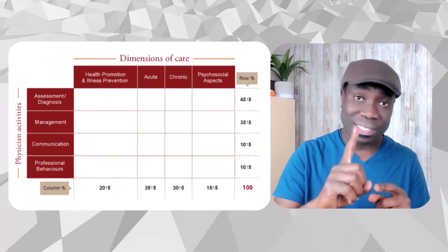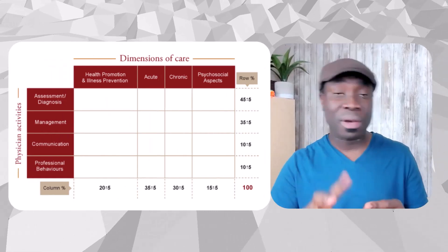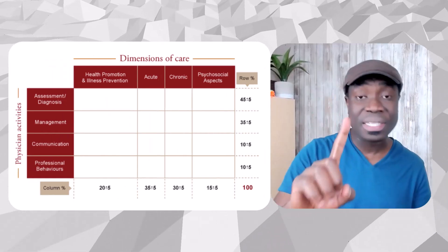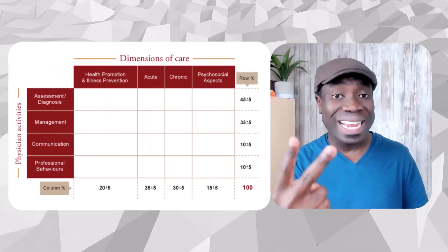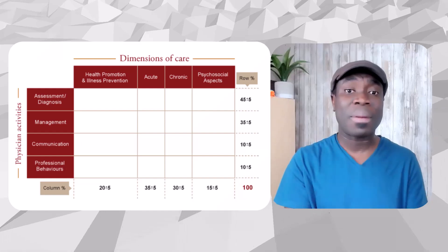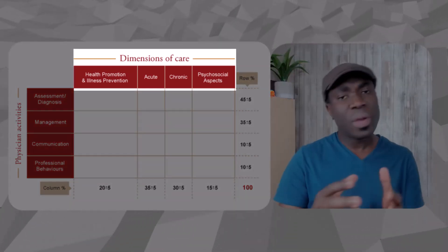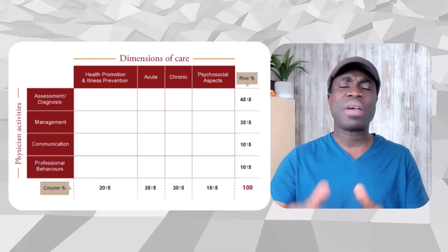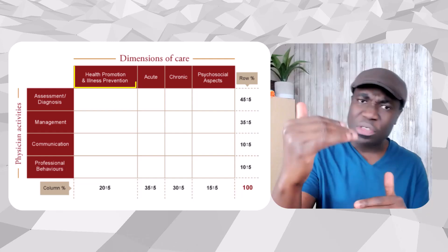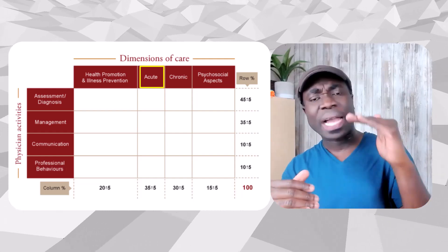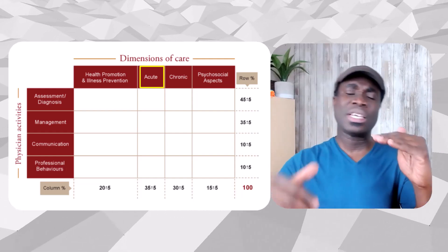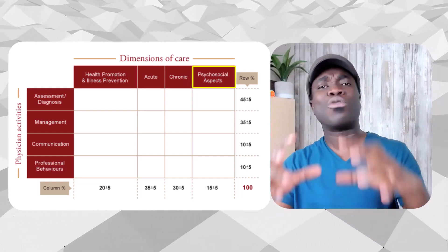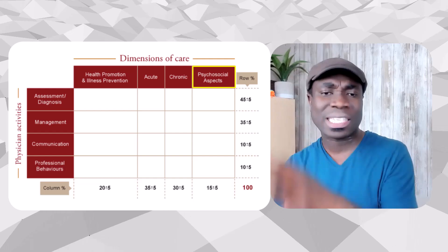The second axis talks about dimensions of care. Under dimensions of care we have health promotion, acute illness, chronic illness, and psychosocial aspects — which covers psychiatry, mental health, and related areas.